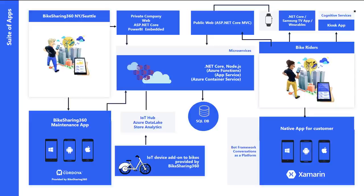For the enterprise side, you have a private website with Power BI embedded, so you can get analytics on what's going on with your business. You also have a maintenance application — if someone on the road reports an issue, you get a notification. We wanted an example using Cordova, so we built a Cordova maintenance application that also works on all different platforms. In previous years we released all apps together in one GitHub repo, but this year we decided to split everything into seven different repos, so you can just grab the one you need.